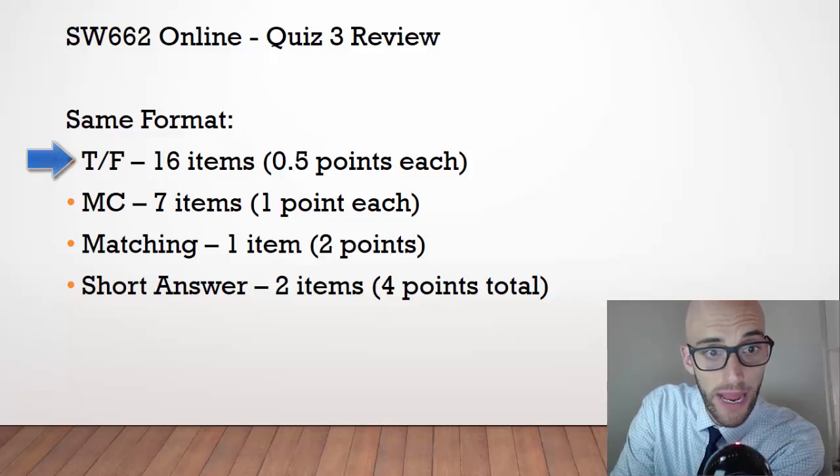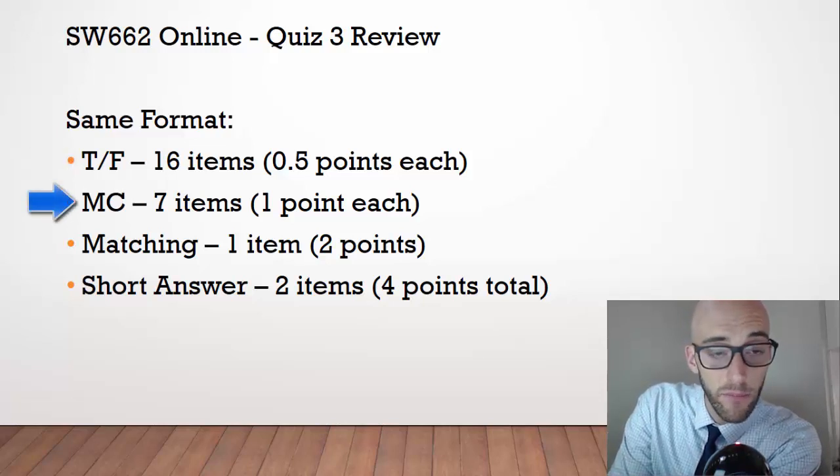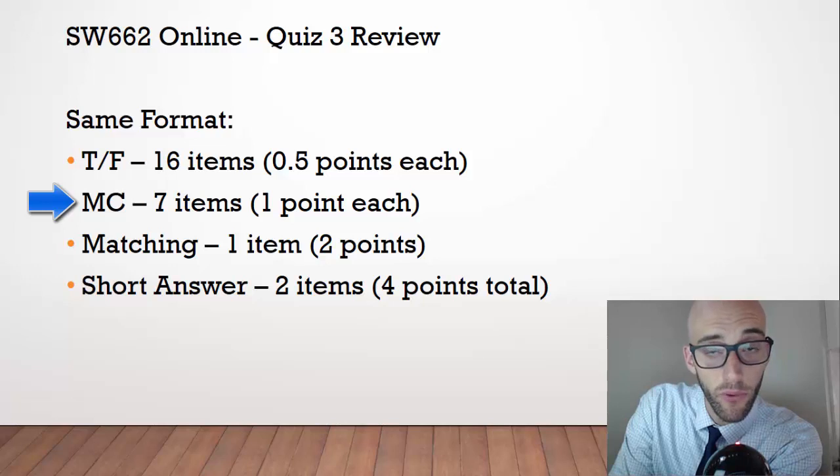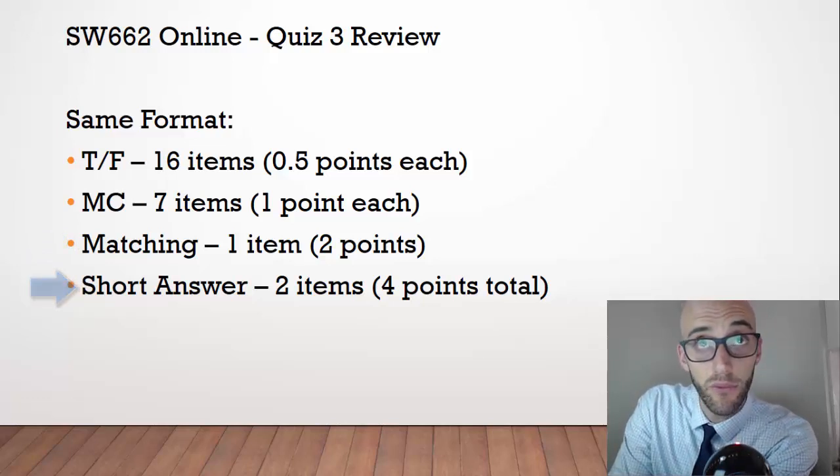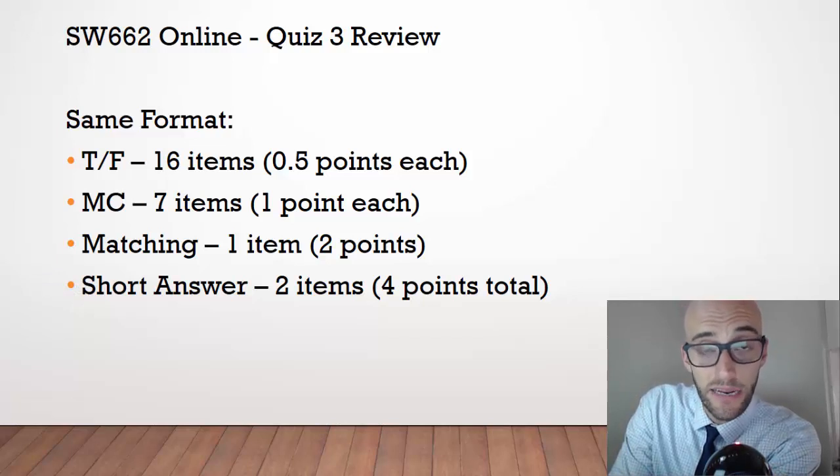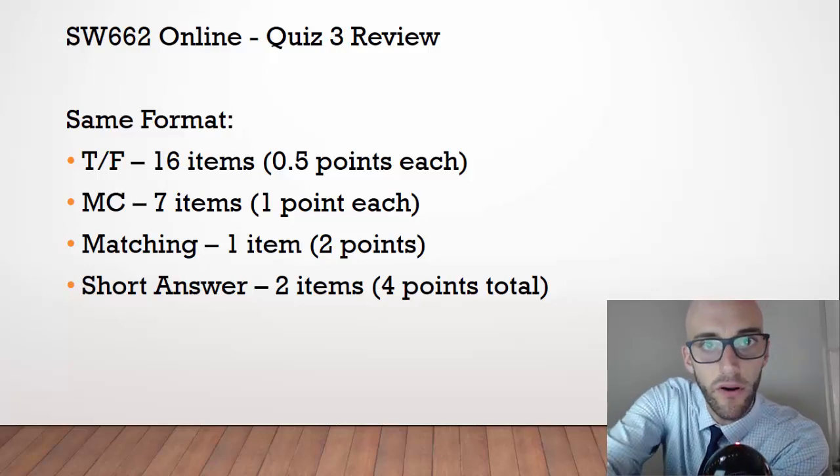There will be 16 true and false total, each worth half a point. There will be seven multiple-choice items worth one point each, one matching item, and two short answer items worth four points total. All the points add up to 21, so you could potentially get more than 100%, and those extra points add wiggle room if you don't know some items.